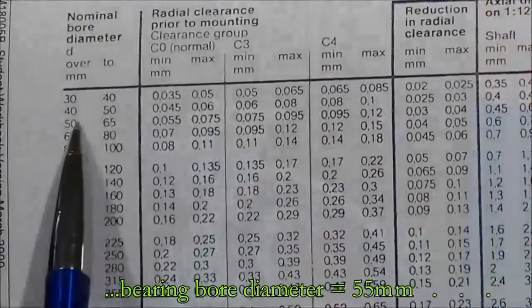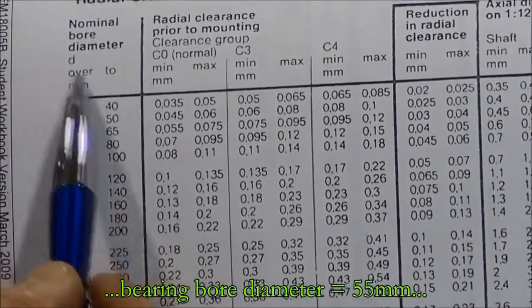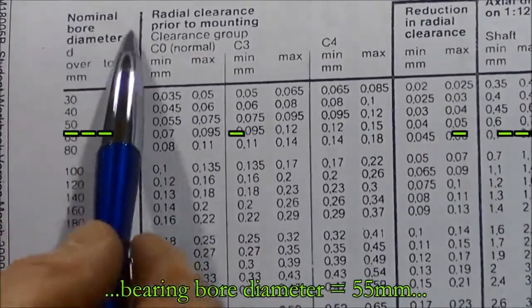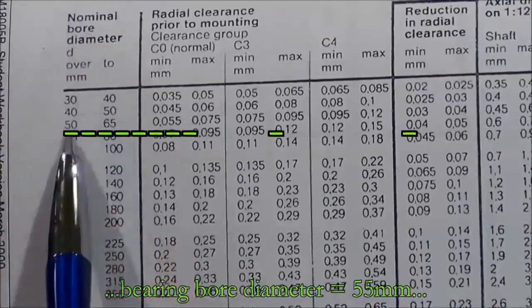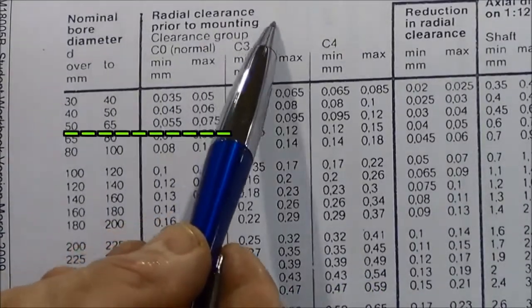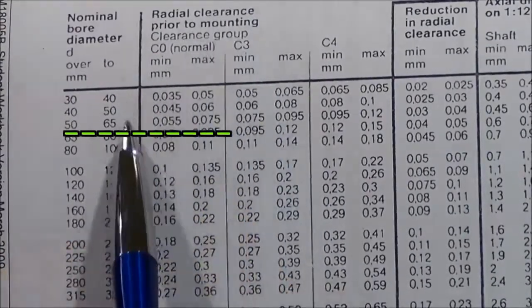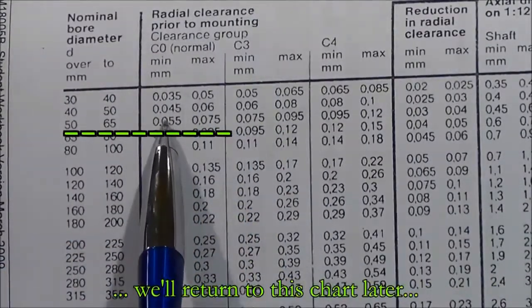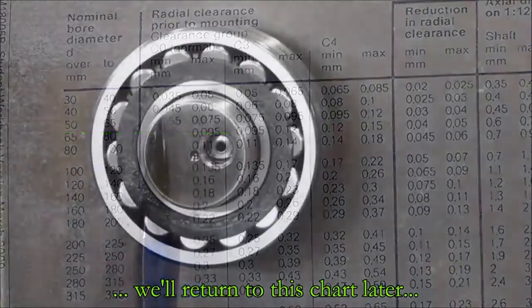So if we go down the table on the chart here, the nominal bore, we can see that 55 is inside the 50 to 65 range. So we would sit inside that. The radial clearance prior to mounting on that size of bearing should be 5.5 hundredths to 7.5 hundredths clearance.